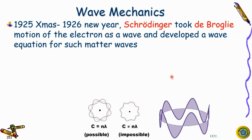The third and most important topic is the Schrödinger equation. Schrödinger was a PhD student struggling to finish his thesis. In 1925, over Christmas and the New Year, an idea popped into his mind. Schrödinger took the De Broglie motion of electrons as a wave and developed a wave equation for such a matter wave. This was a great moment for Schrödinger and for all of humanity.